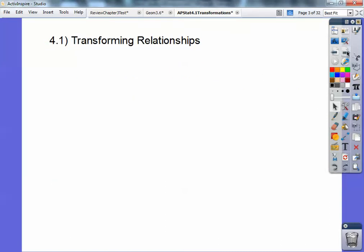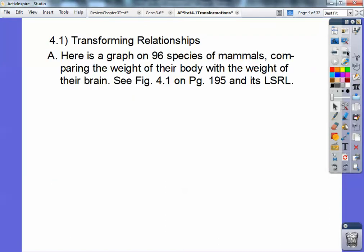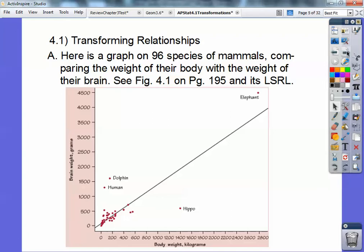Here's the graph of 96 species of mammals comparing the weight of their body with the weight of their brain. This is figure 4.1 on page 195 and its least square regression line. There it is.